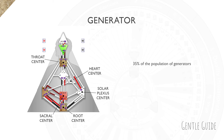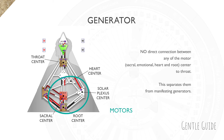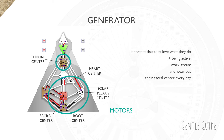If we go back to their chart, the important thing about Generators is that they don't have a direct connection between any of the motors — which are sacral, emotional, heart, and root centers — to throat, which we have seen with Manifestors. This is also what separates them from Manifesting Generators, which we'll discuss next. For Generators, it's important that they love what they do.